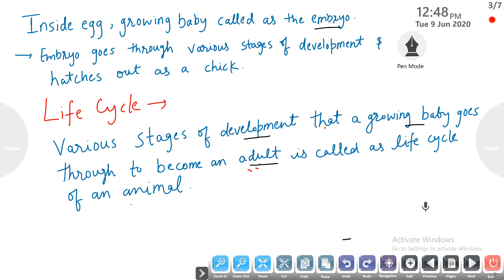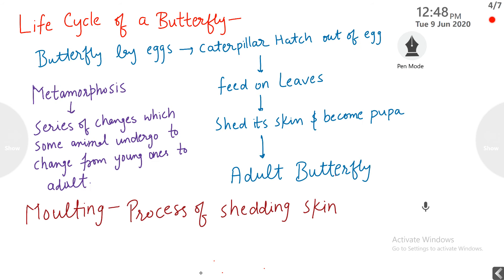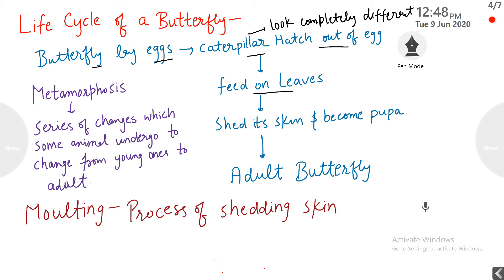Now we will study the life cycle of a butterfly. It starts with the butterfly laying eggs. A caterpillar hatches out of the egg — the larvae that comes out is the caterpillar, and the caterpillar looks completely different from the butterfly. The caterpillar feeds on leaves, then sheds its skin and becomes a pupa, and then the pupa becomes an adult butterfly. This is the life cycle of a butterfly.